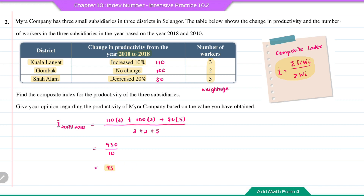The composite index is less than 100, meaning there is a decrease compared to the base year. The decrease in percentage can be calculated by 100 minus 93, which is equal to 7%. So the productivity of Myra Company in the year 2018 decreased by 7% compared to the year 2010.